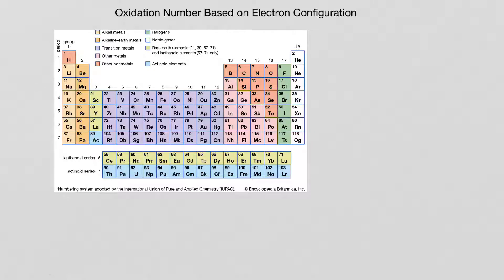In this video we are going to assign oxidation numbers based on electron configuration. We will follow the rules provided in module 8.3. The first element we're going to practice with is lead — to get the lead out. Bad joke, sorry.